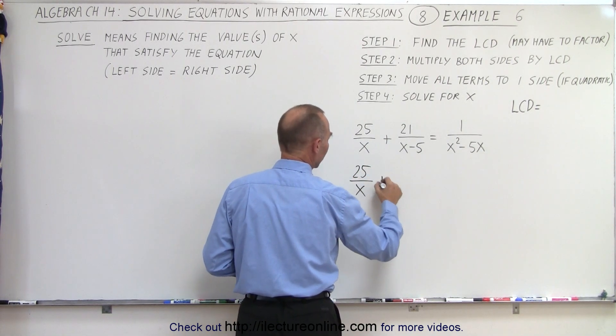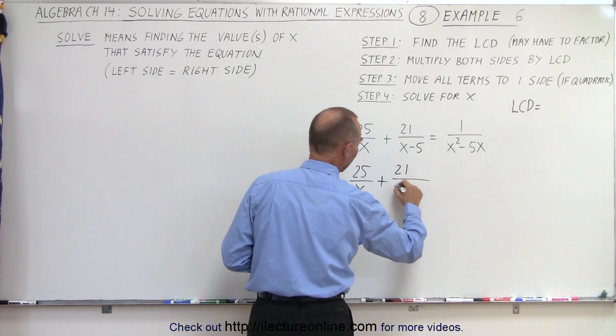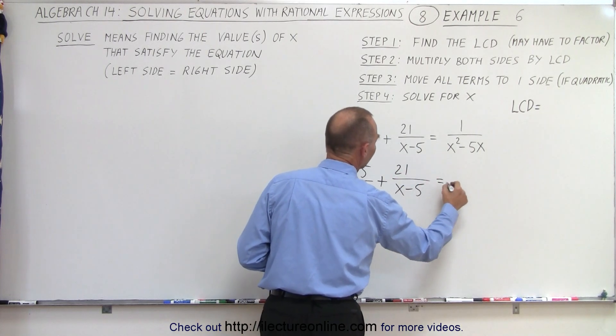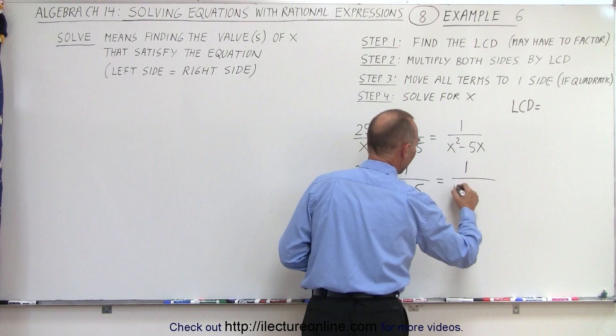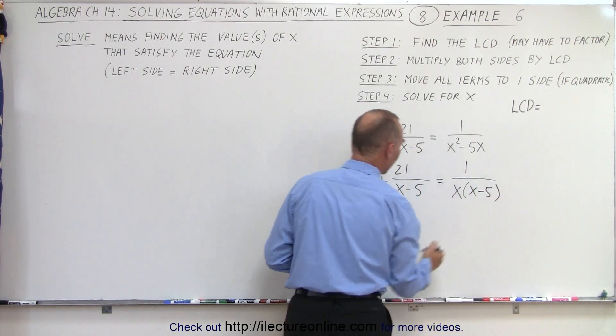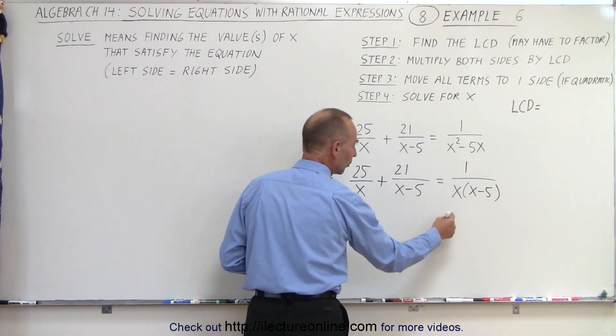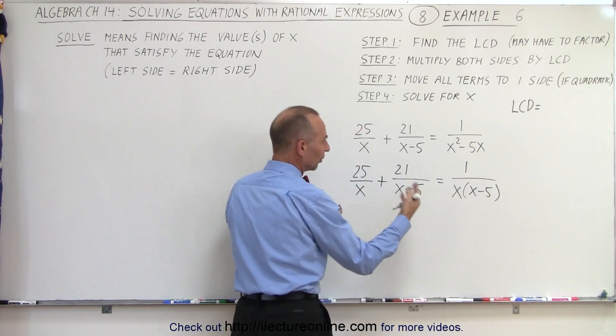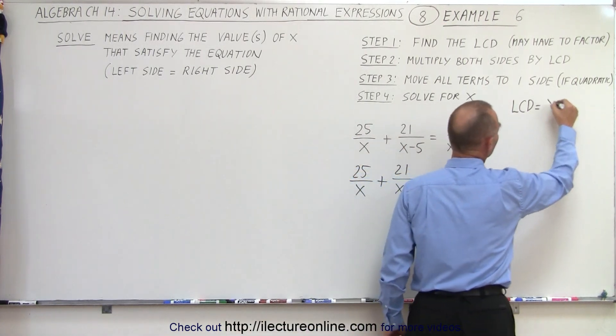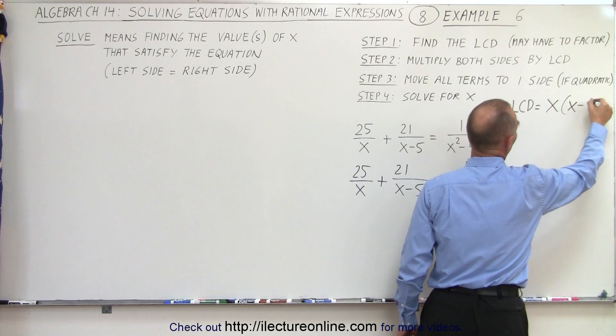25 divided by x plus 21 divided by x minus 5 is equal to 1 over x times x minus 5. And then you look at these denominators and notice that this is the product of these two, so that becomes the lowest common denominator, x times x minus 5.